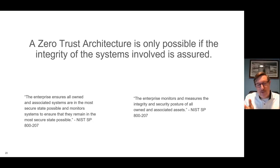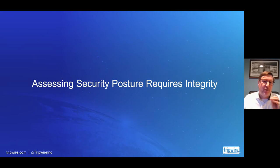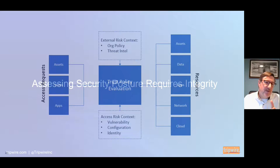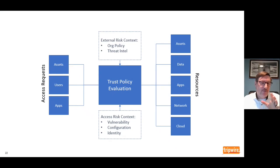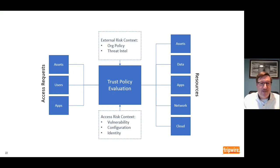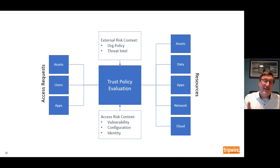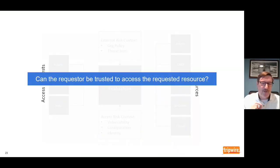When assessing whether a requester has access to a resource, there are a couple of things to assess, and assessing security posture requires integrity. If you look at a zero trust architecture — access requests going through a trust policy evaluation engine, with context being fed into that evaluation — they all boil down to one fundamental question that zero trust is asking continuously: can the requester be trusted to access the requested resource? And that's where we go back to establishing and maintaining trust.